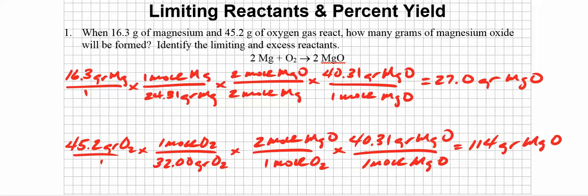Number one says: when 16.3 grams of magnesium and 45.2 grams of oxygen gas react, how many grams of magnesium oxide will be formed? And we're going to identify the limiting and excess reactants. Remember that we have really two jobs here. The first is to identify what's limiting — either magnesium or oxygen is going to run out first, depleted before the other. The one that runs out first is called the limiting reactant; the other is called the excess reactant.